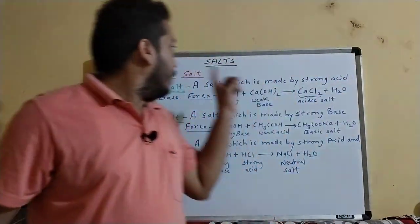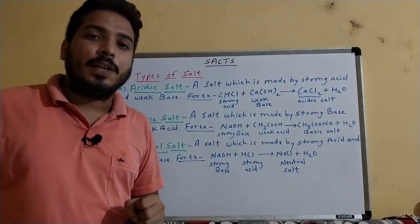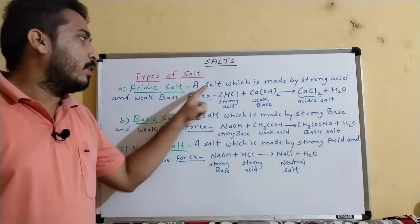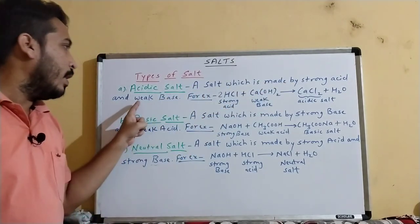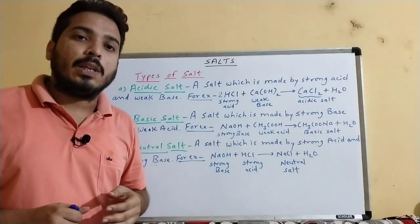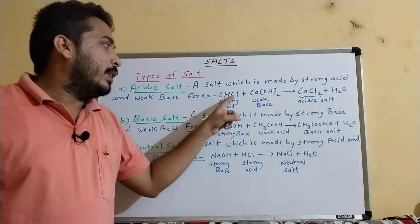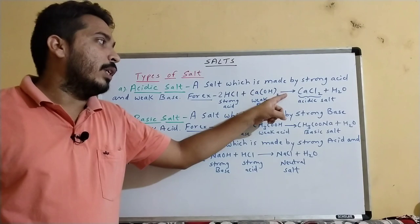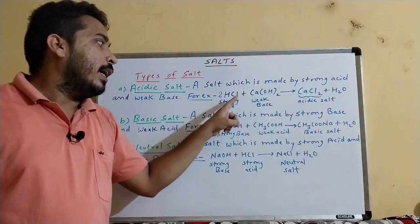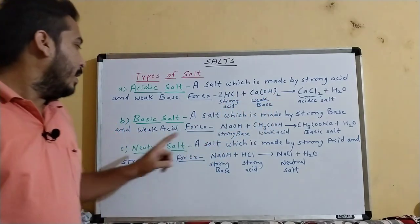Now we will talk about types of salt. Salt has been classified into three types generally. First is acidic salt — a salt which is made by a strong acid and a weak base. For example, 2HCl reacting with calcium hydroxide gives calcium chloride plus water. Here, HCl is the strong acid and calcium hydroxide is the weak base.